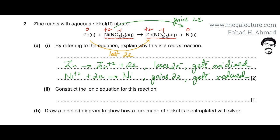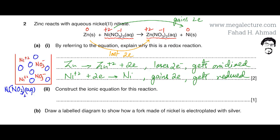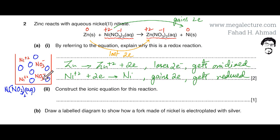The ions break down in water and swim around in separate directions. This diagram shows what nickel nitrate looks like dissolved in water — the blue dots are water molecules. When mixed in water, nickel nitrate dissociates and the ions move in different directions among water molecules; they are no longer combined together.